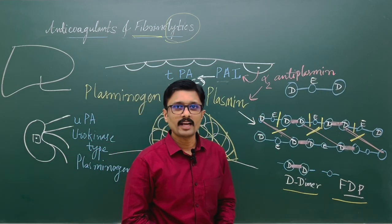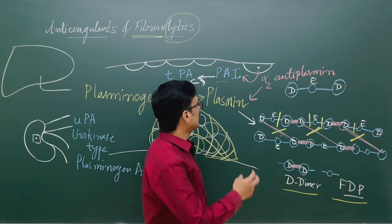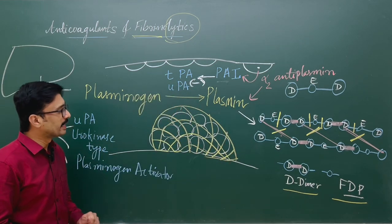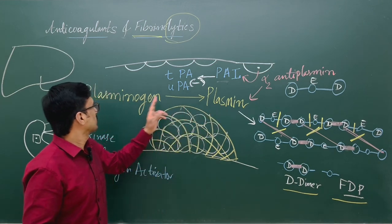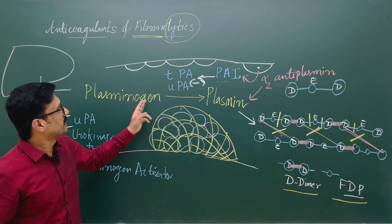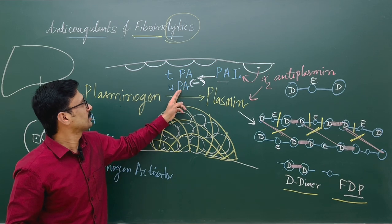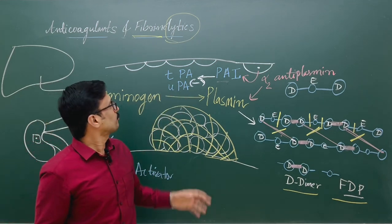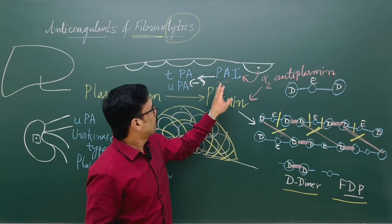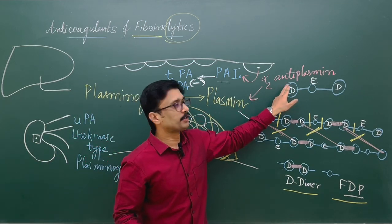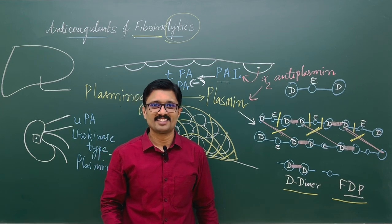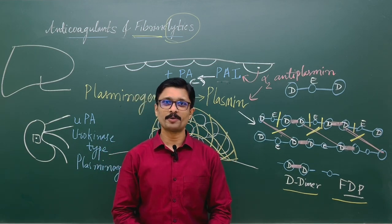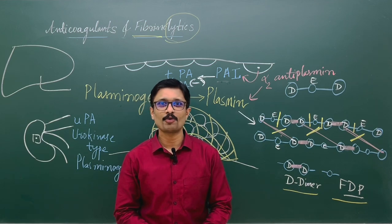Also, if there is excess plasmin, this plasmin cutter is also under regulation by one more protein — alpha-2 antiplasmin — which inhibits plasmin actions. So the fibrinolytic system mainly involves plasmin and its precursor plasminogen, their activators (tissue-type and urokinase-type plasminogen activators), and the regulators — plasminogen activator inhibitor and alpha-2 antiplasmin. This is all about the fibrinolytic system and its regulation. Thank you for watching.